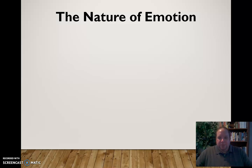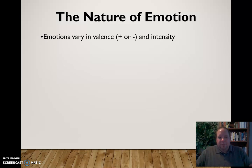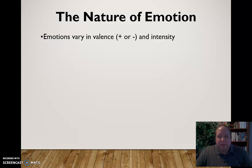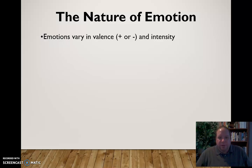So the nature of emotion — let's talk about some basic principles. Emotions vary in valence, meaning positivity or negativity, and intensity. When we talk about emotions varying in valence, we're talking about whether this is a positive or negative emotion. An emotion with positive valence would help us achieve our goals, while an emotion with negative valence would keep us from getting to our goals.